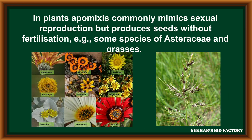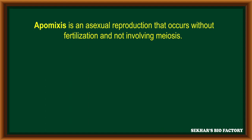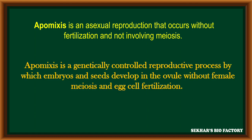Apomixis is generally observed in some plants like Asteraceae members and grasses, because apomixis mimics sexual reproduction — sexual reproduction is replaced by asexual reproduction. It occurs without involvement of meiosis division along with fertilization. Apomixis is a controlled reproductive process in which embryos and seeds are developed from the ovary and ovule without the female gamete undergoing meiosis division, and without fertilization in the egg cell.